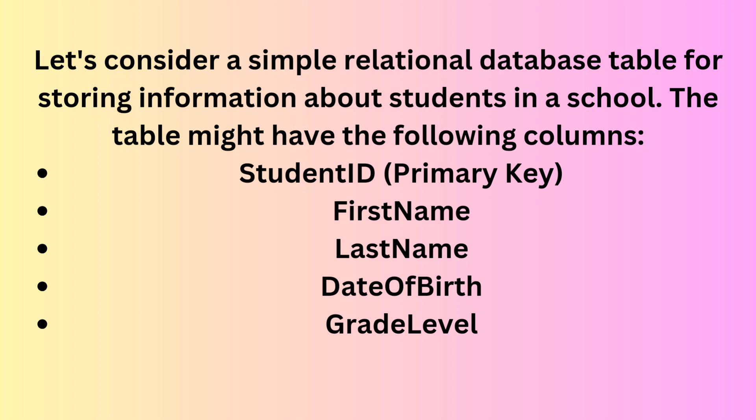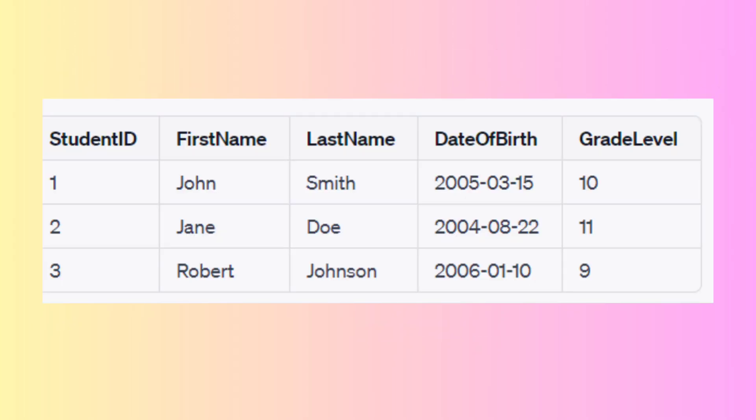Here's an example of how the table might look with some sample data. The Student ID column enforces entity integrity by ensuring that each student has a unique identifier. This uniqueness is critical for accurately identifying and managing student records. If someone attempts to insert a new record with a Student ID that already exists, the database system will typically reject the insertion or raise an error to maintain entity integrity.